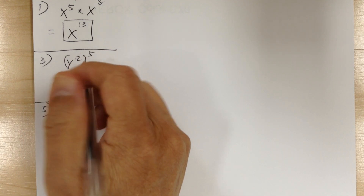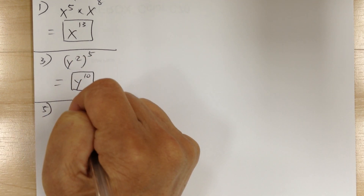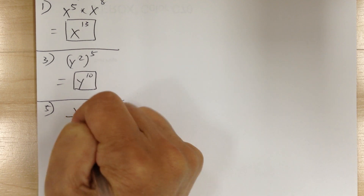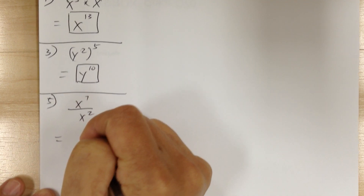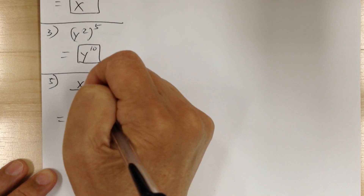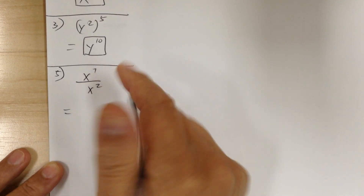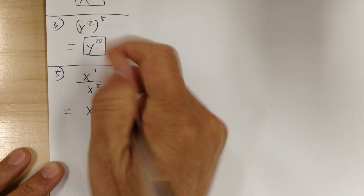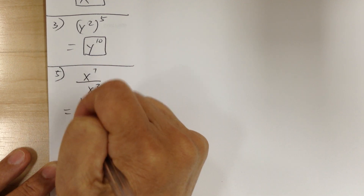Number 5, you have x to the 7 over x to the 2. So this is a division, so you have to use the quotient rule. With multiplication, you add. With division, you subtract. So it would be x to the 5. So 7 minus 2 gives you 5.